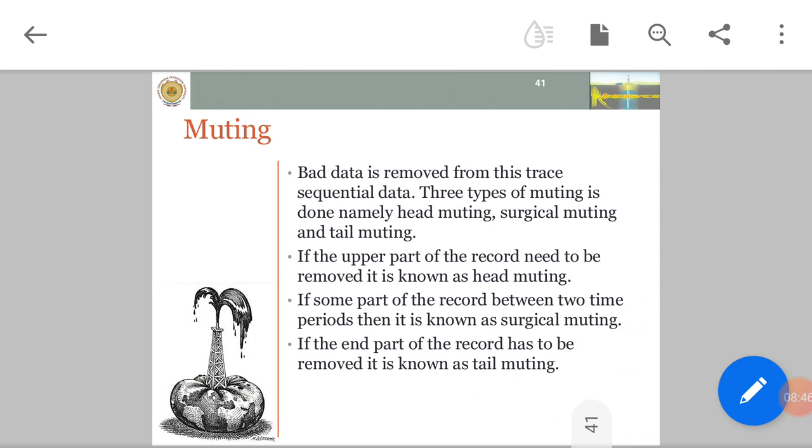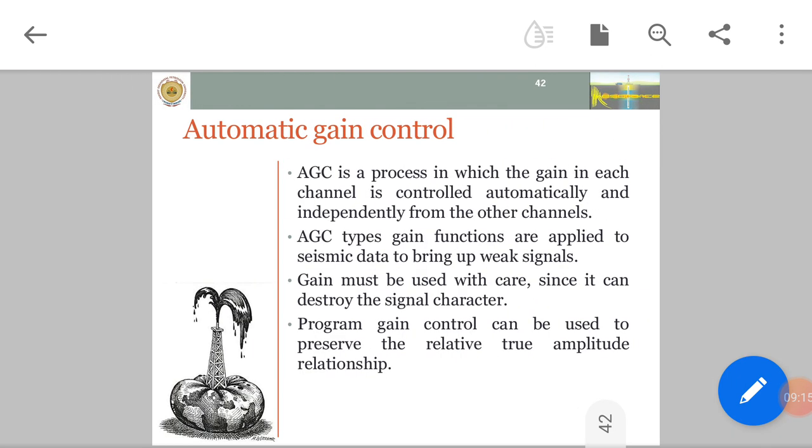The step required is called muting. Bad data is removed from trace sequential data. Three types of muting are done: head muting, surgical muting, and tail muting. If the upper part of the record needs to be removed, it is known as head muting. If some part of the record between two time periods needs to be removed, it is known as surgical muting. If the end part of the record has to be removed, it is known as tail muting.